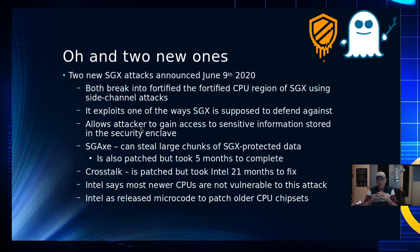Two new ones — and both of these affect SGX. These allow us to break into the fortified areas of the CPU region of SGX using side-channel attacks. There's SGX-ROP, which allows grabbing large chunks of data, and also Crosstalk. Both of these took a number of months to get the code working. Crosstalk was just recently patched and released on June 9th of this year. SGX has been around for five months in the wild. Intel says their newer CPUs are not vulnerable to these attacks, and they have released microcode for older chipsets.